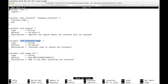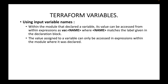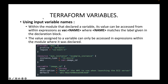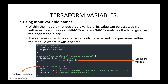The label name, for example, is 'it_instance_type' in that variable block. To use this variable we use var dot the label name. The value assigned to a variable can only be accessed in expressions within the module where it was declared — basically within the same configuration files. For example, here I've declared my variable block with 'image_id' as the label name, given a type, description, and default value. To call it we use var.image_id.